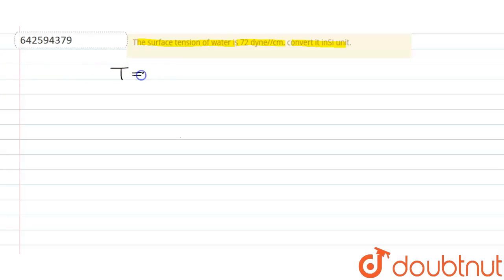Capital T is equal to 72 dyne per centimeter. So we want to convert it into SI unit. So the given surface tension is in CGS unit.